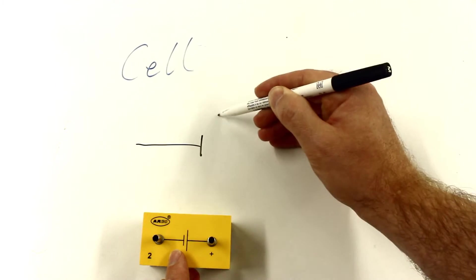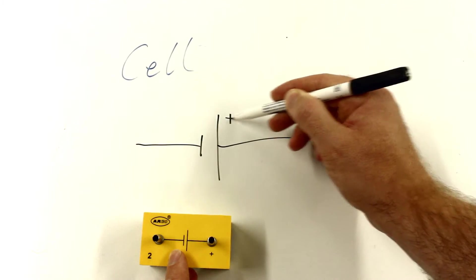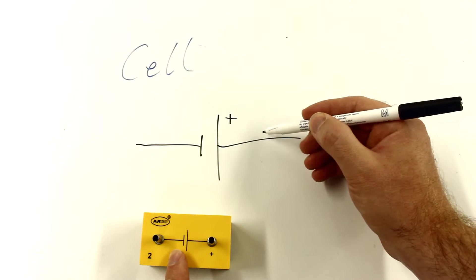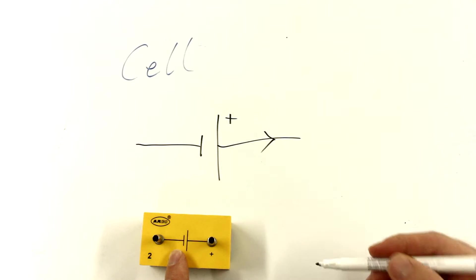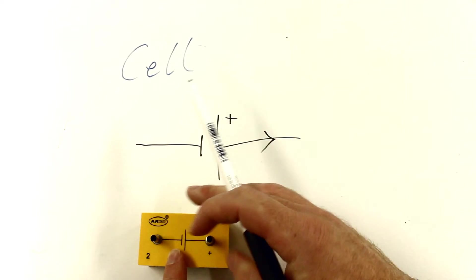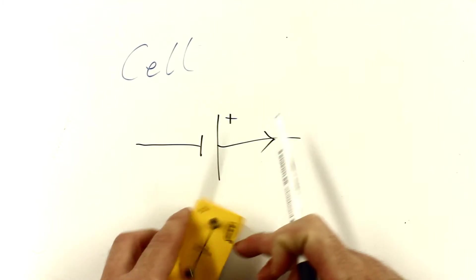You need to remember, when you draw this, the larger one is the positive side of the cell. And that current is always going from positive to negative, even though we know electrons are going in the opposite direction. So that's a cell.